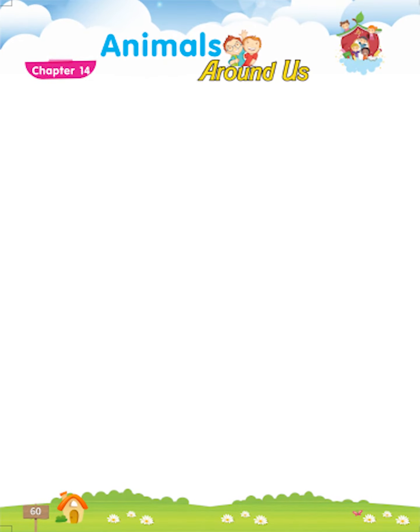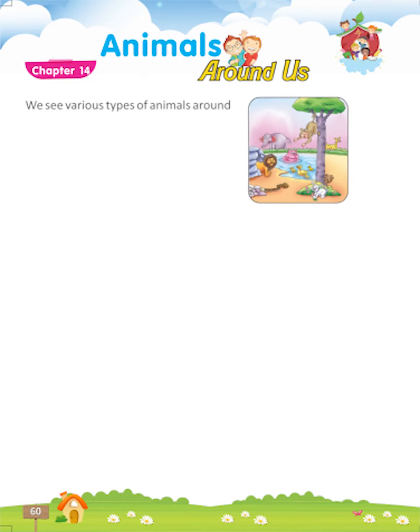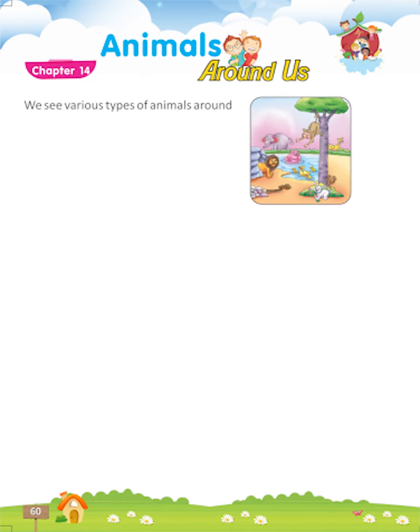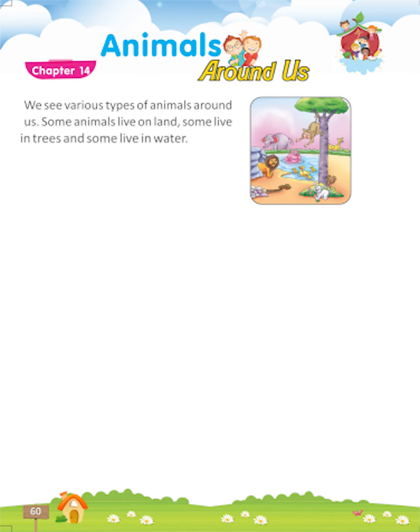Let's start. Chapter 14: Animals Around Us. We see various types of animals around us. Some animals live on land, some live in trees, and some live in water.